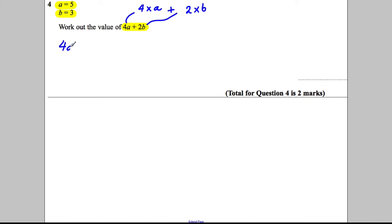4A is going to be—show the examiner you're working—4 multiplied by 5, which is equal to 20.